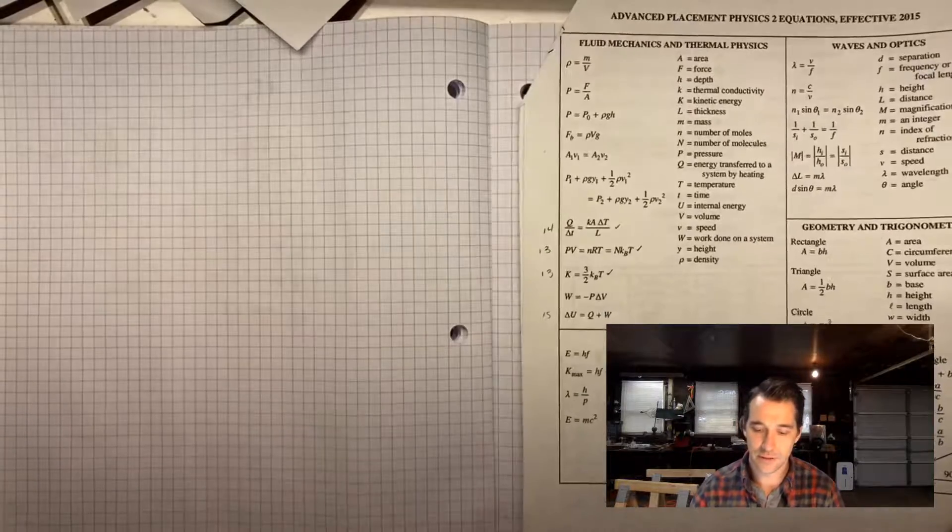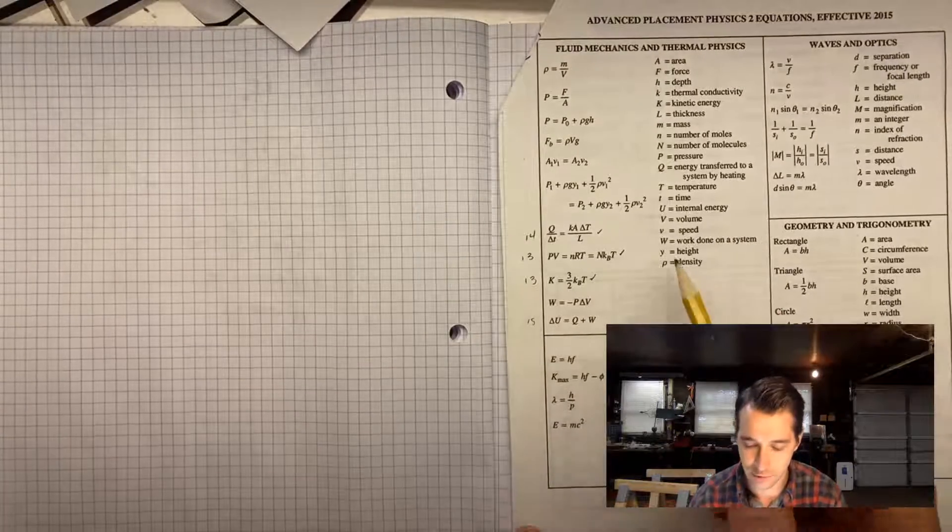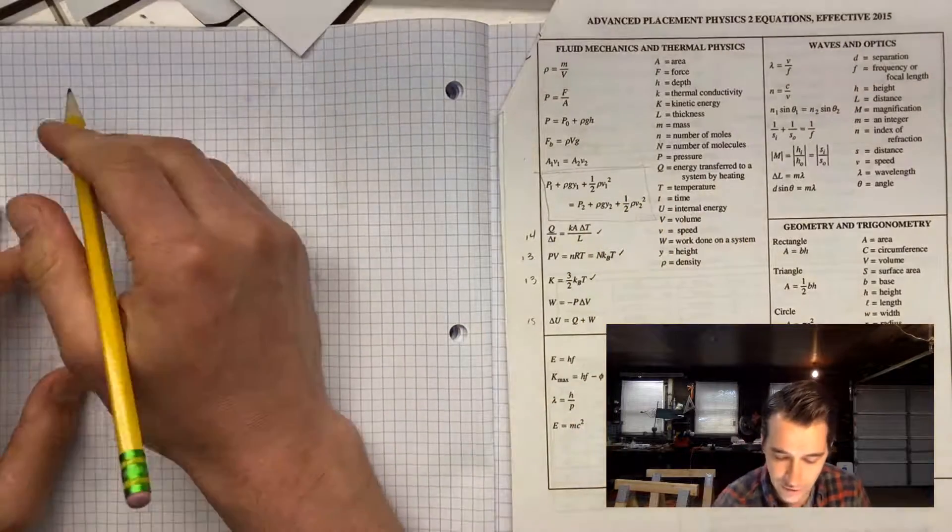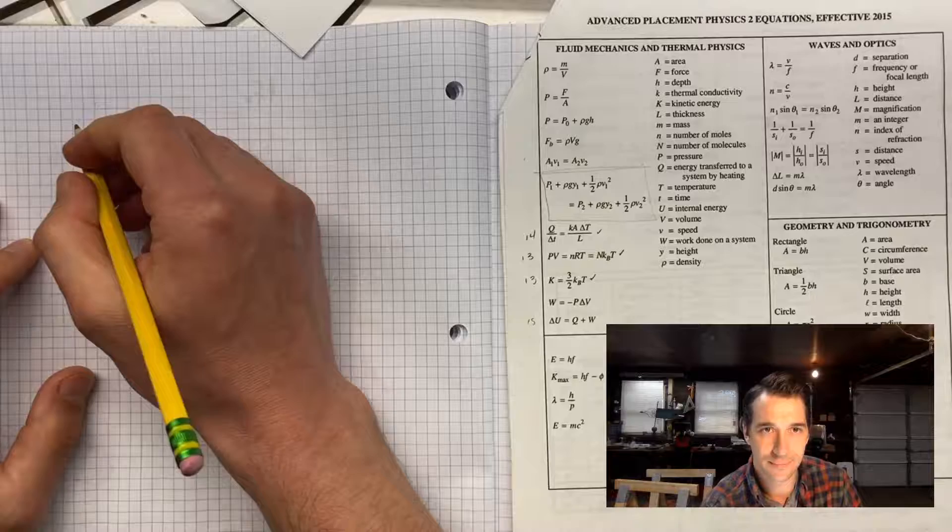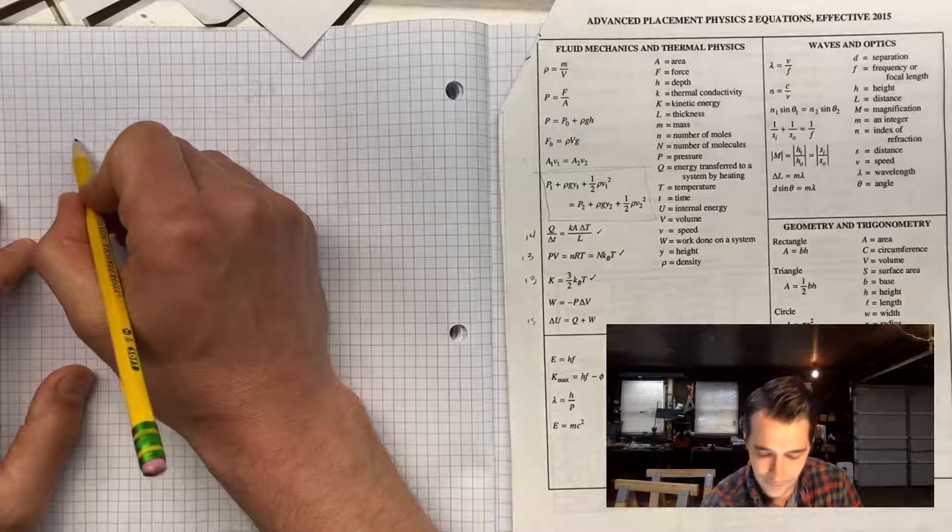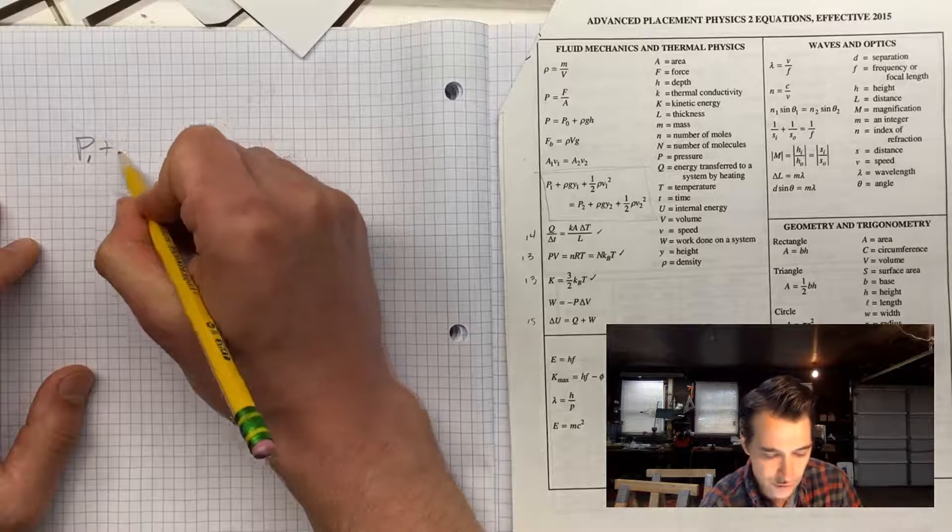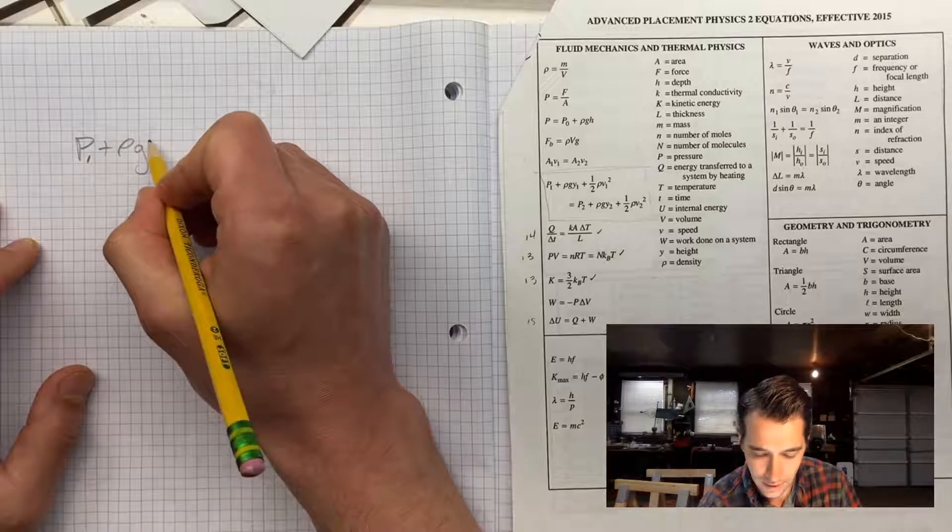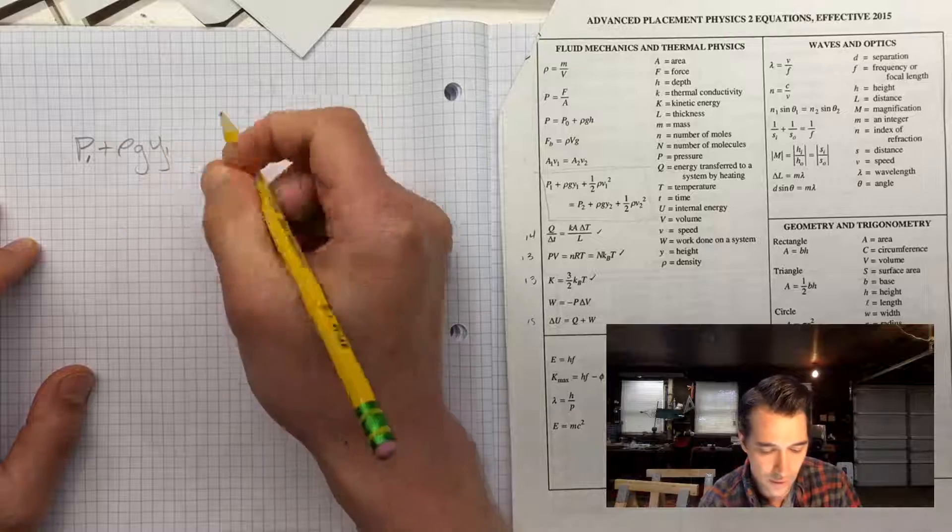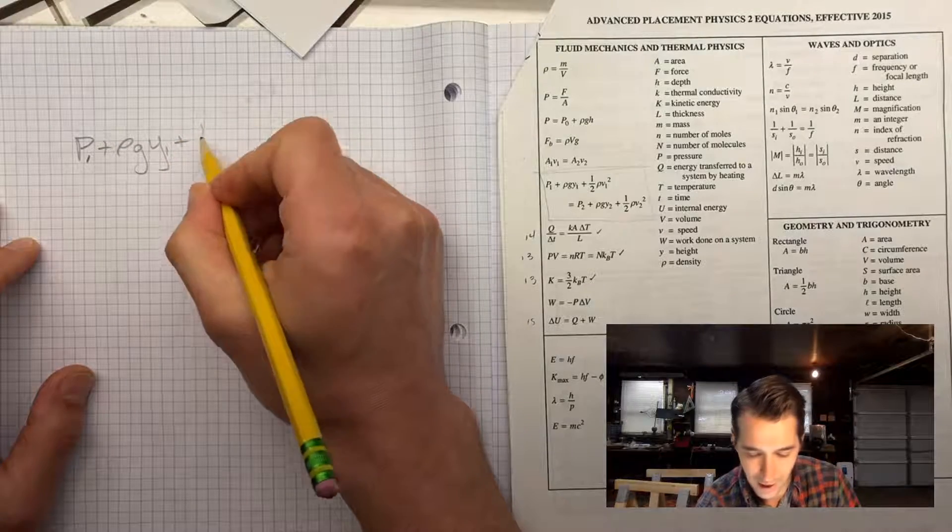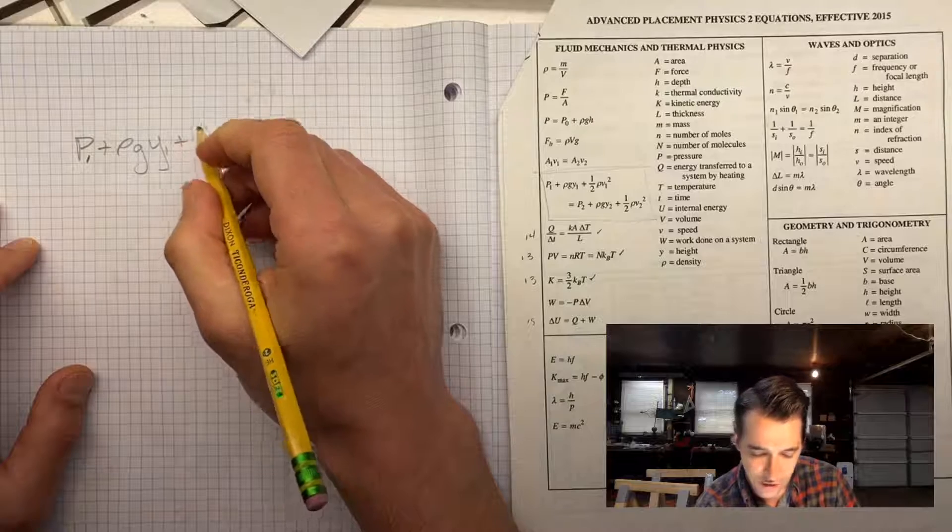So let's pull out our physics 2 reference table. Let's look at Bernoulli's equation. I'm going to rewrite it over here, but I just want to make sure you know where to find it. Here's Bernoulli's equation. I'm going to transpose that over here. We're going to take a look at it, dive a little bit into it so that we get a better understanding of Bernoulli's equation, and hopefully we can use this in other scenarios, not just a pipe that changes its diameter and changes its height.